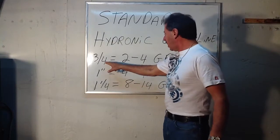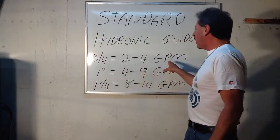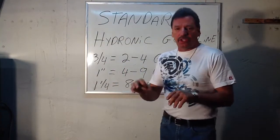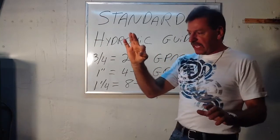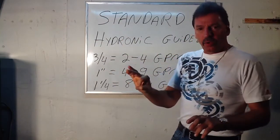If you're using three-quarter, you're going to get two to four gallons a minute. No more than that because you just can't really get that much more out of the pipe because there's not that much water in there. It's a small pipe.